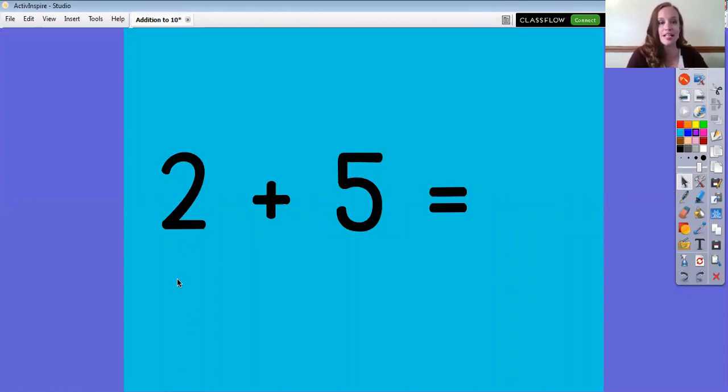The first problem that we have here is 2 plus 5. So let's put the bigger number in our brain. In this case the bigger number is 5. So that's the one I'm going to put in my brain first. And then we're going to count up since we're adding 2 more numbers. 5 in our brain and count up 2 more. 5, 6, 7. The answer is 7. Across the sky and down from heaven. That's the way to make a 7. 2 plus 5 equals 7.